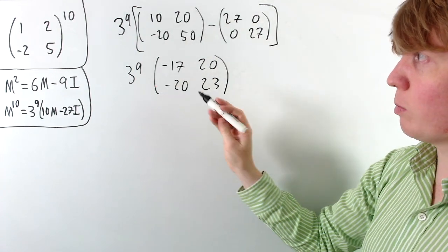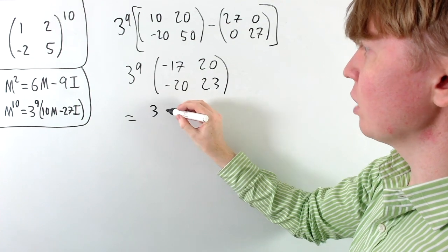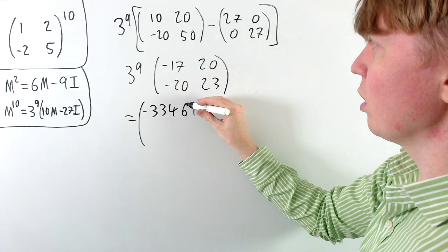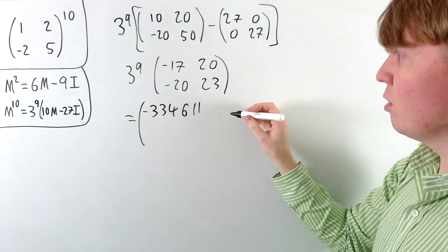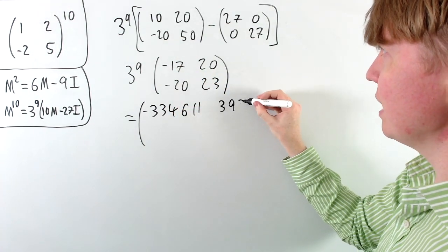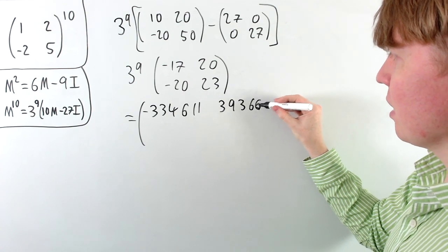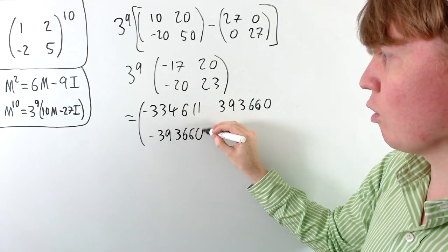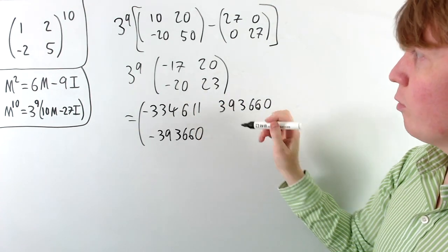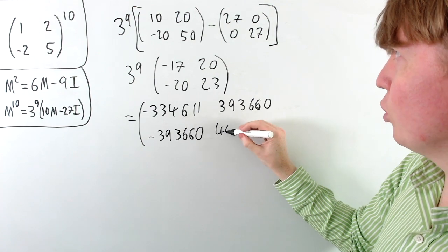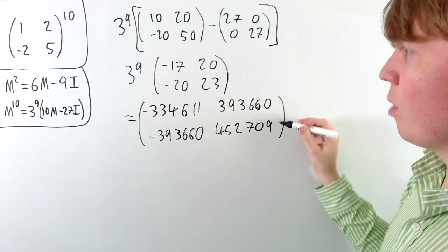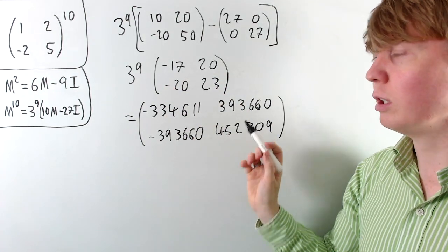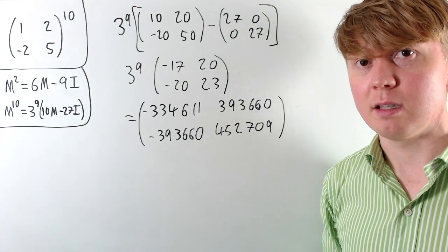If you want the fully expanded form, you can multiply through by 3 to the 9. The entry -17 times 3 to the 9 gives -3,936,141 and 20 times 3 to the 9 gives 3,936,600 for the top-right entry, with its negative for the bottom-left, and 23 times 3 to the 9 for the bottom-right entry. You can either leave the answer in the nice factored form or calculate the explicit entries of M to the power of 10.